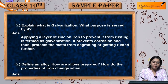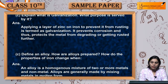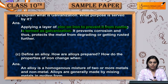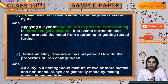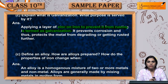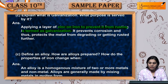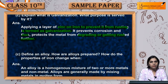Explain what is galvanization and what purpose is served by it. Applying a layer of zinc on iron to prevent it from rusting is termed as galvanization. Iron is a metal that is corroded or rusts if we leave it in the atmosphere. When we place a layer of zinc on iron, iron's direct contact with the atmosphere is blocked, which prevents rusting and corrosion, thus protecting the metal from degrading further.